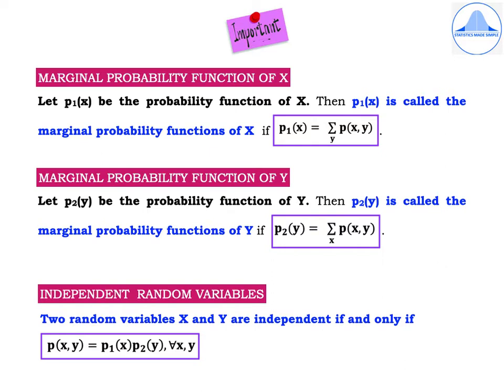Now we come to the last definition: independent random variables. Two random variables x and y are independent if and only if p of x comma y equals p1 of x multiplied by p2 of y for all x comma y. All these formulae and the bivariate probability distribution definition are very important and will be used in the next two problems. Practice these formulae so that you remember them.